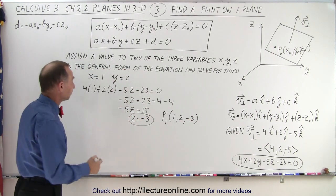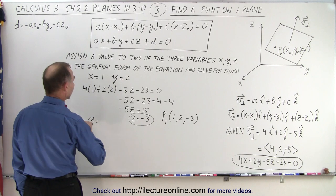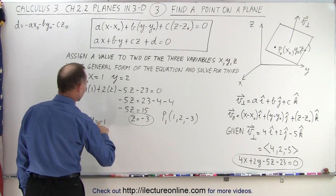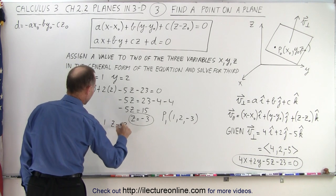All right, let's try another point. So let x, well, let's try y equals, how about negative 1? Or let's call it, now let's call it 1. And z equals negative 3. Let's try that.